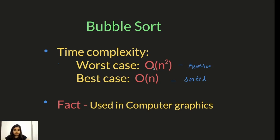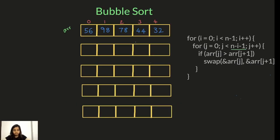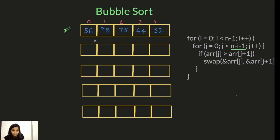Now I'll explain bubble sort with the help of an example. In bubble sort, what we do is we compare adjacent elements — like these two, then these two, then these two, then these two. And whenever we find that the element next to the left element is greater, then we just swap it.